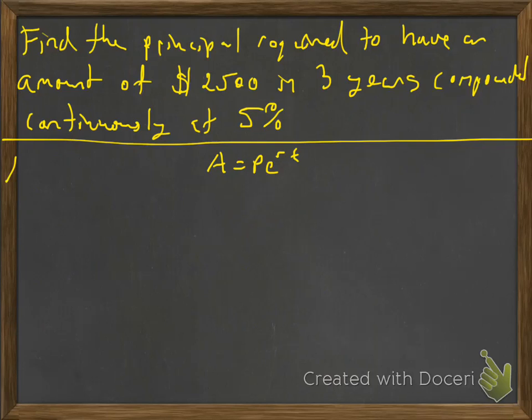It says, find the principal required to have an amount of $2,500 in three years compounded continuously at 5%. So here they're asking us for the principal and then they use the magic word continuously which says that we're going to use PERT.